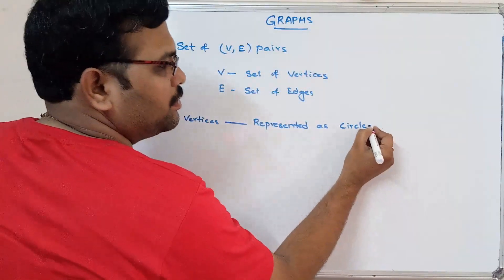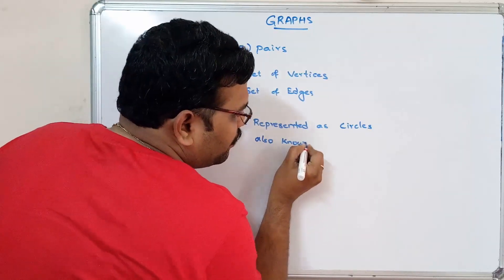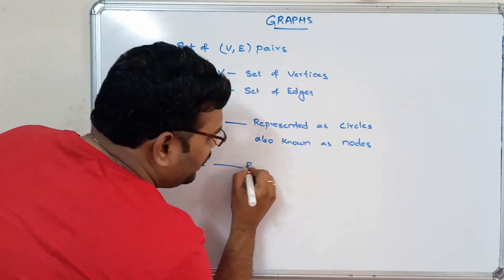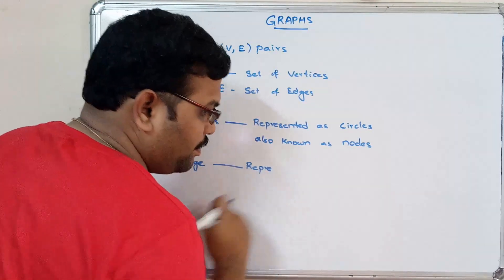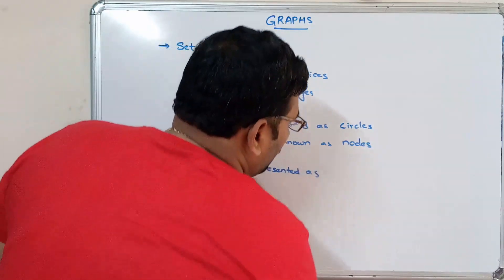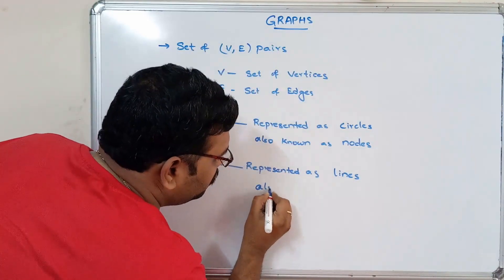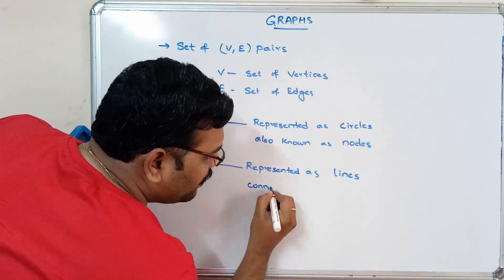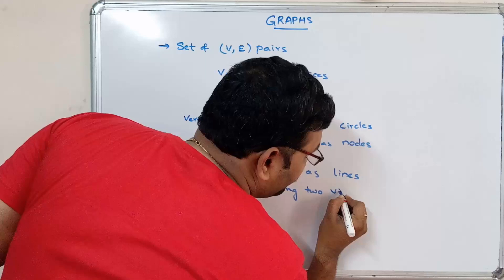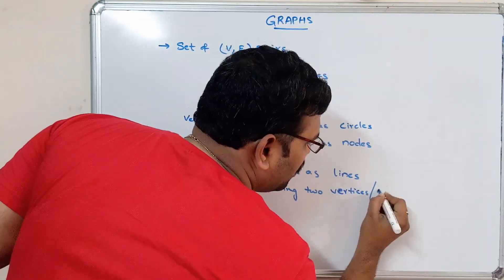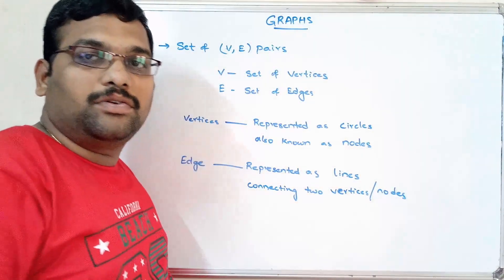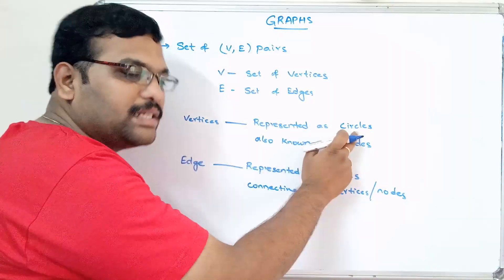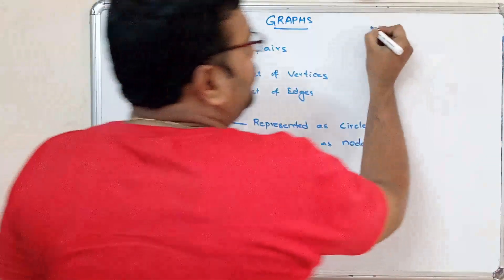Vertices can be represented as circles, and these are also known as nodes. An edge is represented as a line connecting two vertices or nodes. So a graph is defined by its vertices and edges — vertices as circles and edges as lines.